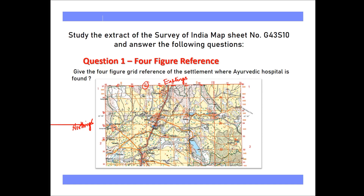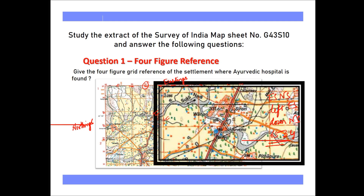We need to know how to write the four-figure reference of any object in the grid. The lines of Eastings and Northings, wherever they intersect, form a grid. To write the four-figure reference, we first write the Easting value, then the Northing value. The rule is: first write the left Easting value, then the bottom Northing value of that grid. So if we are finding the four-figure reference of the grid where Sirori is, we write the left Easting value 65 and the bottom Northing value 34 — giving the answer 6534.